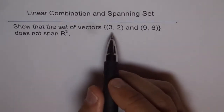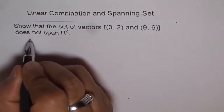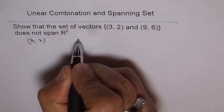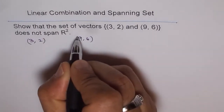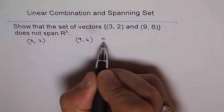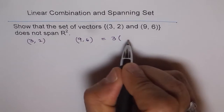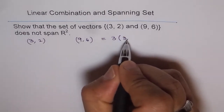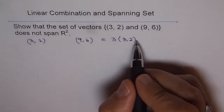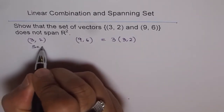If we analyze these two vectors [3, 2] and [9, 6], what do we notice? We notice that [9, 6] is a scalar multiple of [3, 2] — that is, 3 times [3, 2] gives us [9, 6]. So since this is a scalar multiple, we have a scalar multiple relationship between them.